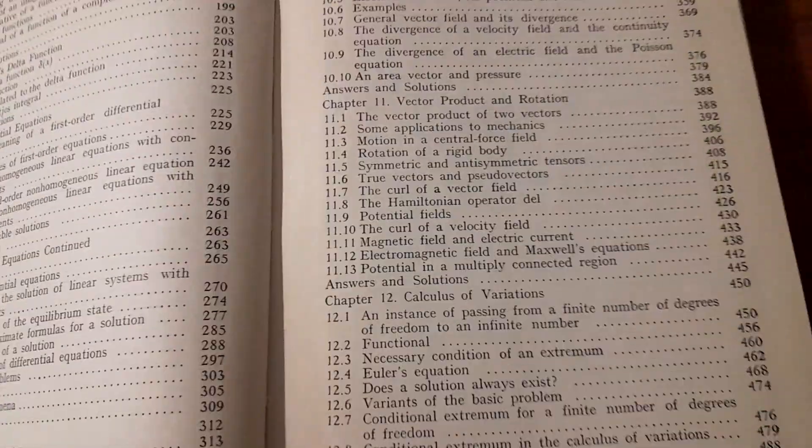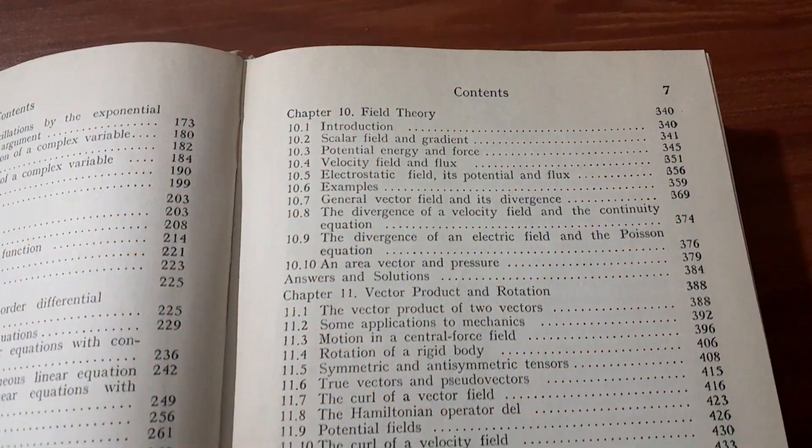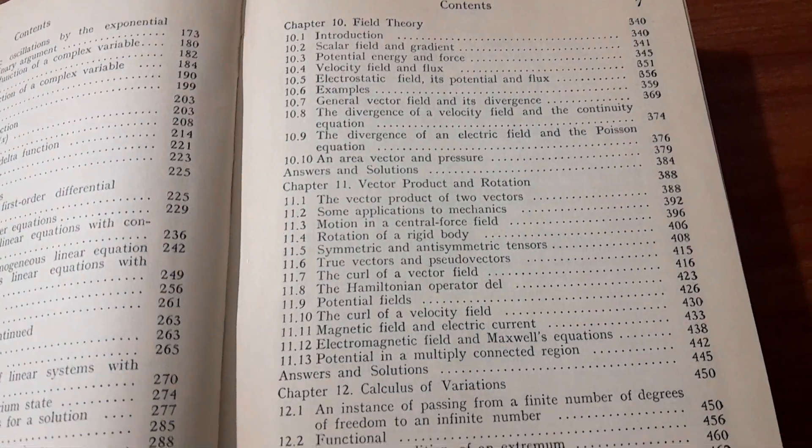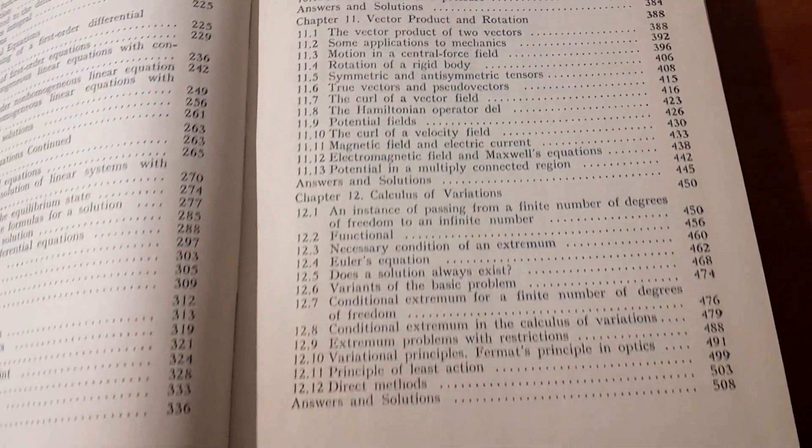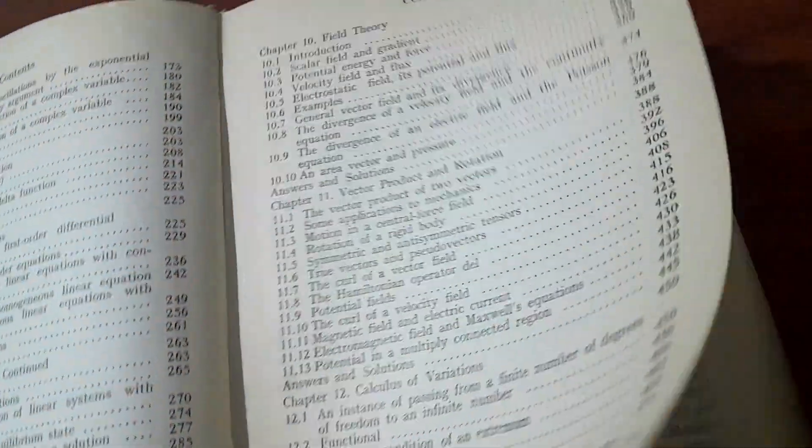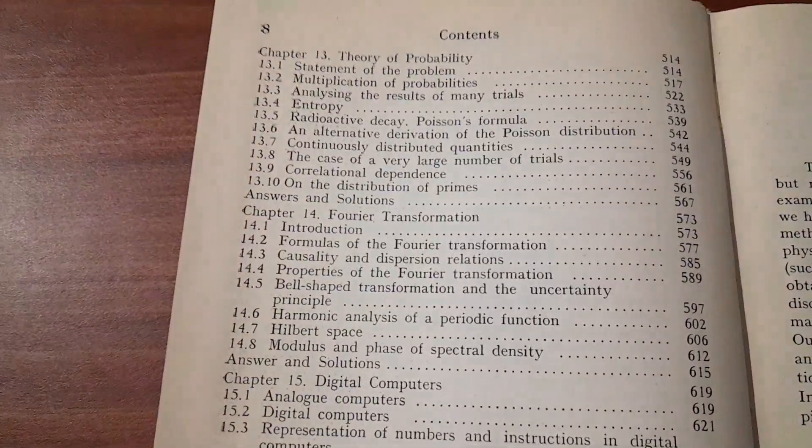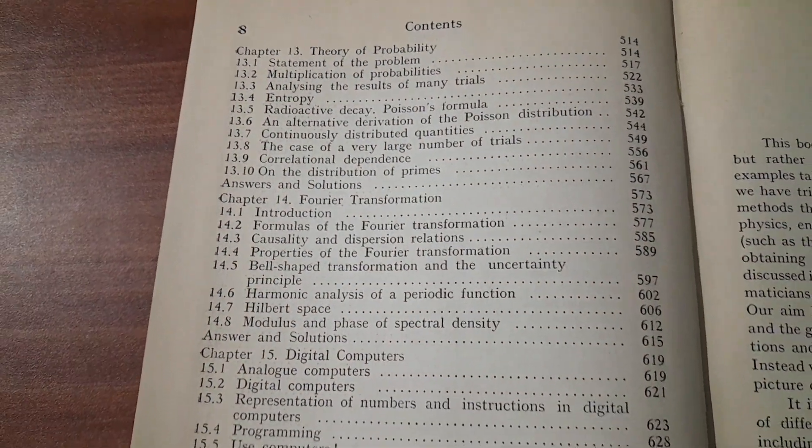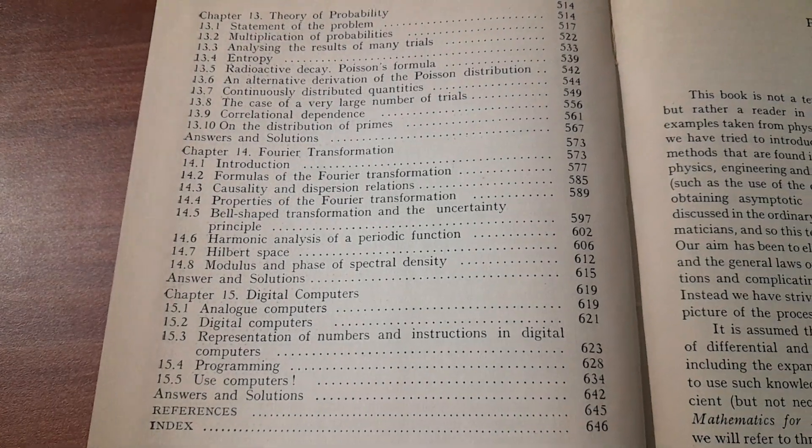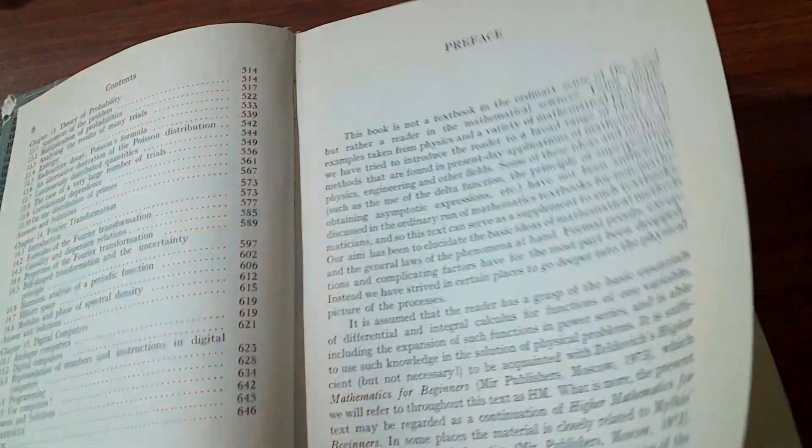Chapter 9 vectors. We have field theory, vector product and rotation, calculus of variations. So we have theory of probability, Fourier transformation, finally digital computers. So let's go through this book briefly.